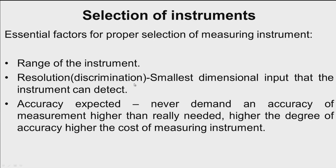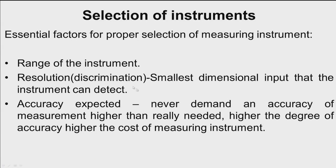Resolution or discrimination is the smallest dimensional input that the instrument can detect, and it depends on the accuracy level expected from the measurement process. If we need to measure a spindle's length to 0.001 millimeters, we should select an instrument capable of that. Regarding accuracy expected: never demand accuracy higher than really needed. The higher the degree of accuracy, the higher the cost of the measuring instrument.